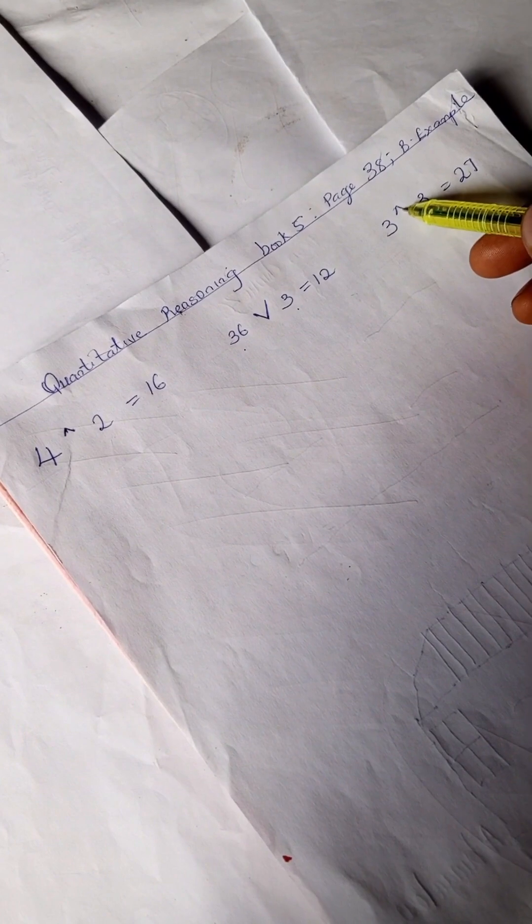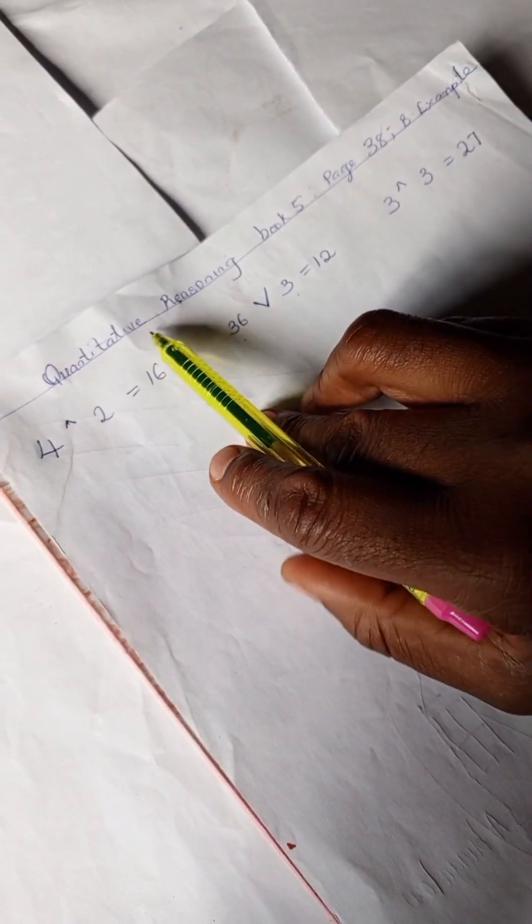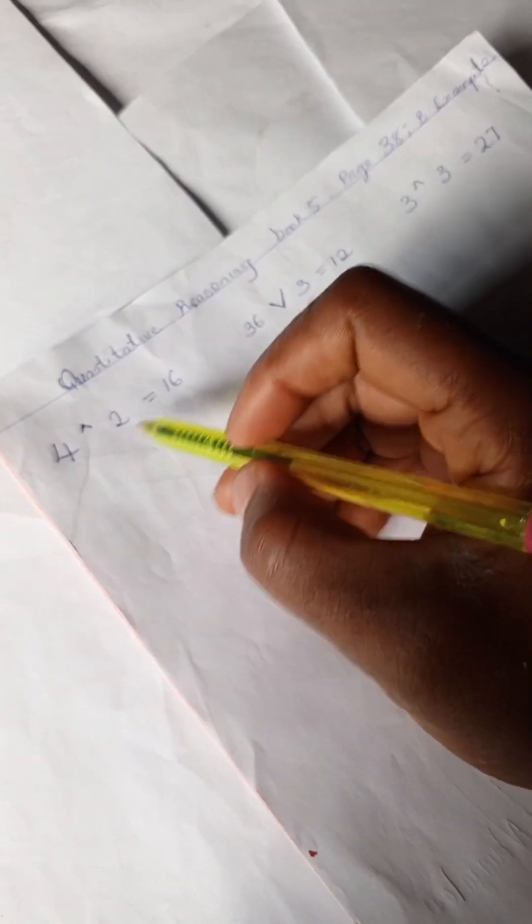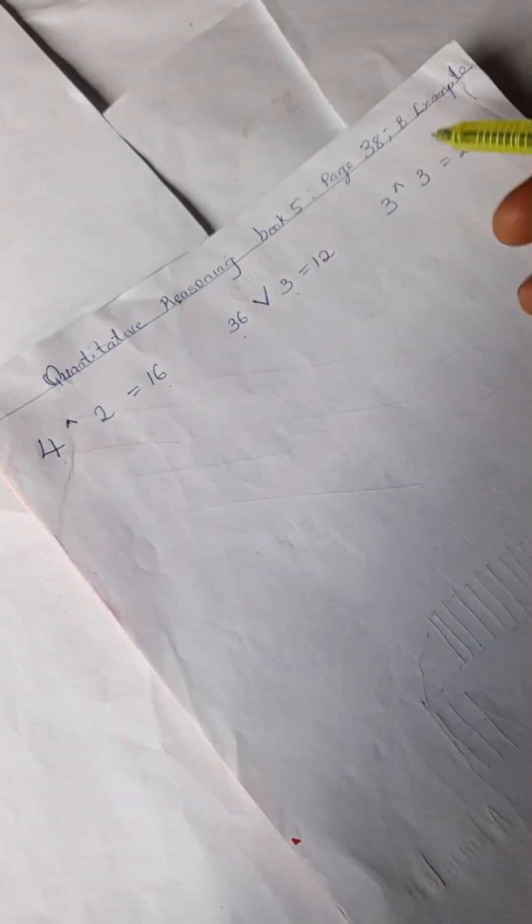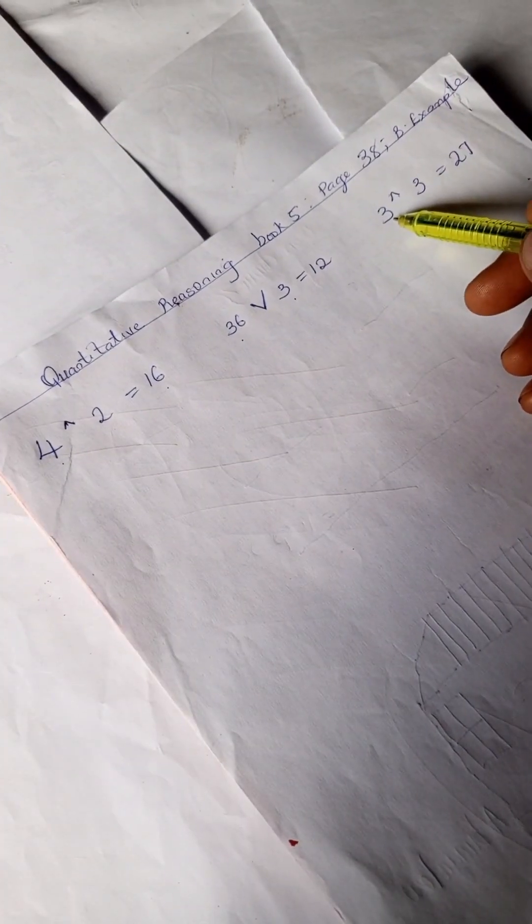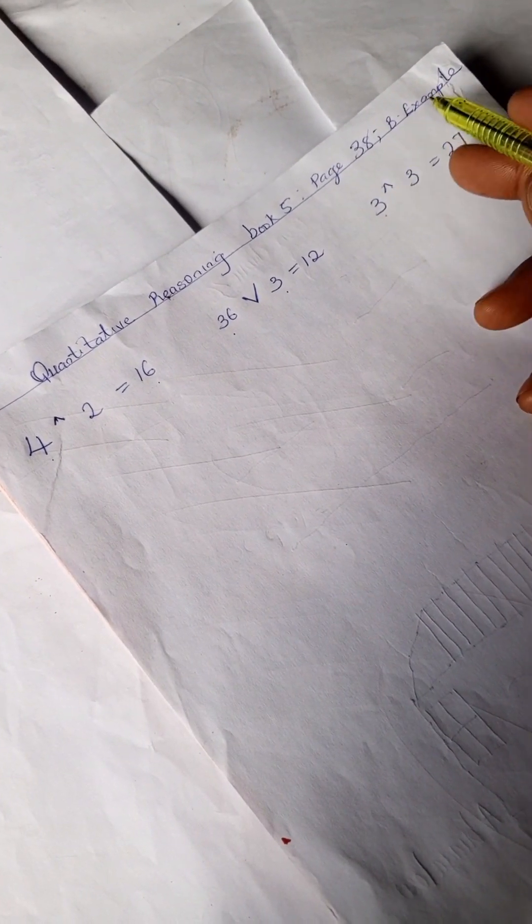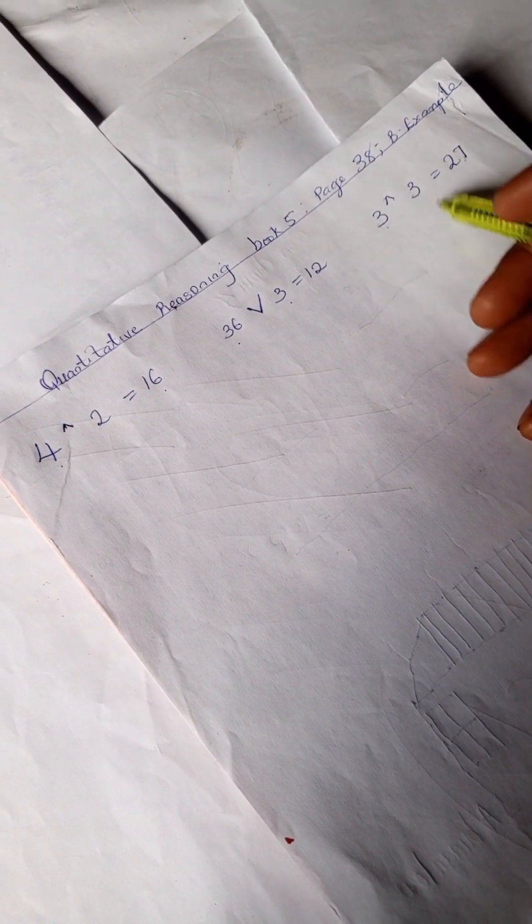We have three, then 12. If you look at this symbol and this one, they are the same, so we're working with two different concepts here. To get these 16, we have four to the power of two. And let's look at the same concept here, we have three to the power of three to get 27.